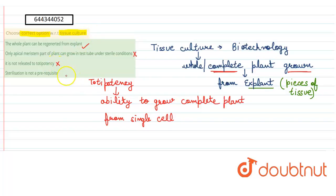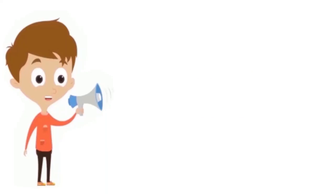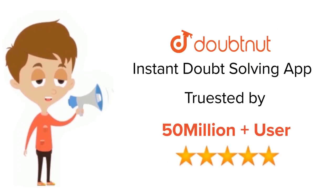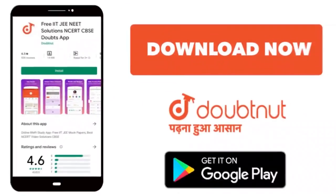Therefore this option is wrong. Fourth one: sterilization is not a prerequisite - this is also wrong because tissue culture is done in lab under sterile conditions. Sterile conditions are very important. So the fourth option is also wrong. Therefore, the correct answer is option A: the whole plant can be regenerated from explant.